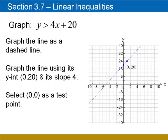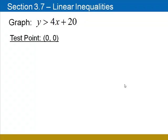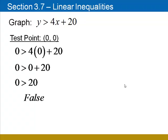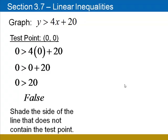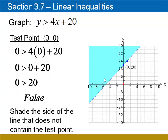Again, the origin is not on the line, so we'll use that for our test point. When we substitute in, we're left with the inequality 0 is greater than 20, which is false. That tells us to shade the other side of the line. Here that's going to be the top left.